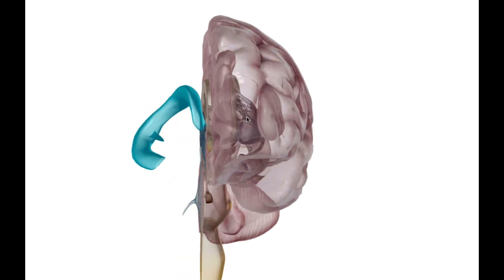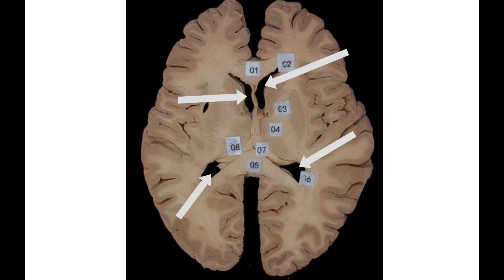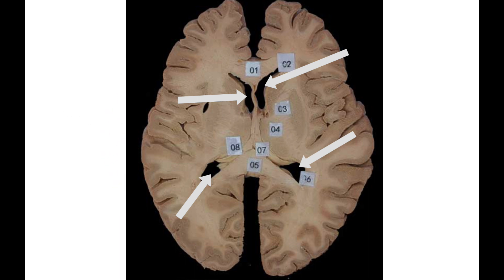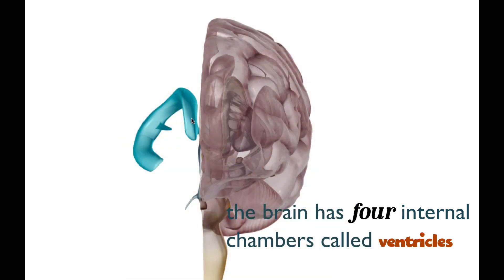Let's dive into the ventricles. These are basically chambers on the inside, so when you look at a dissection of the brain and cut it open, it's going to appear as just voids — like nothing's there. But in a brain that's alive and working, it's filled with cerebrospinal fluid. There are four chambers that we're going to be looking at.